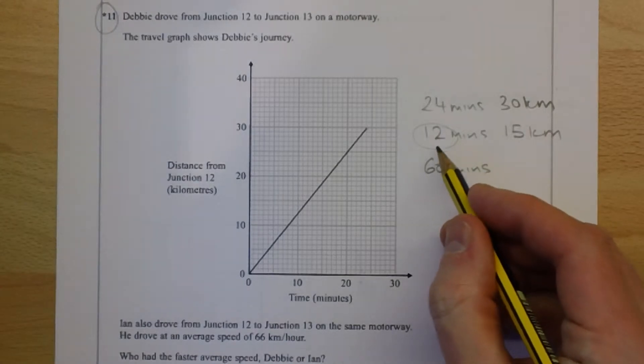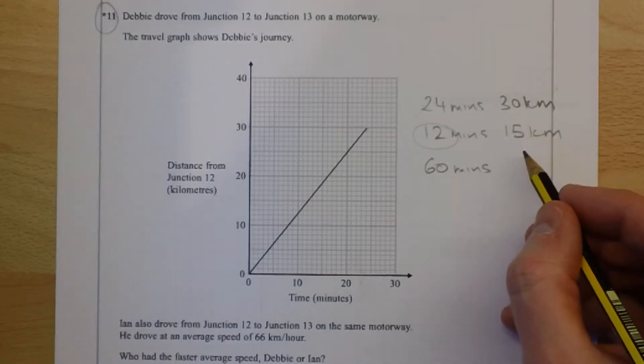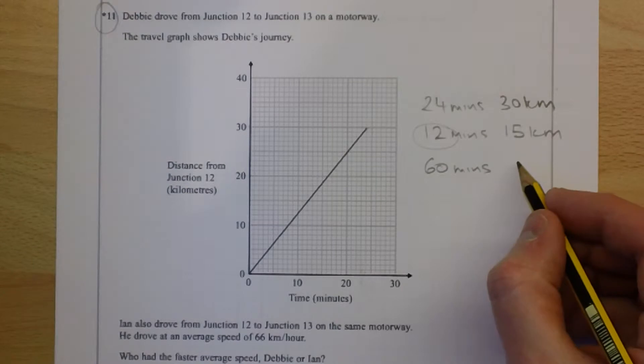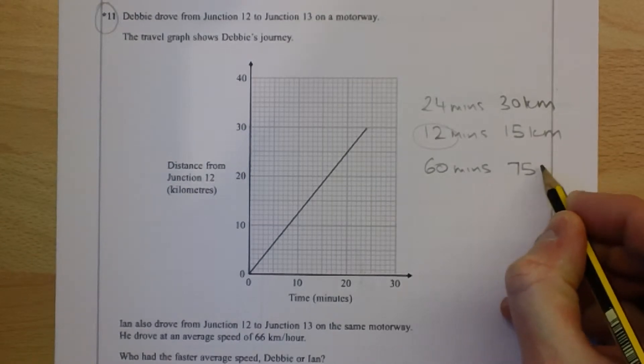And in five times the length, she must have gone five times the distance. And five times 15 is 75 kilometres.